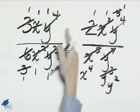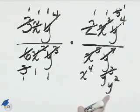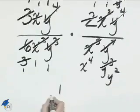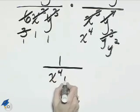All we have across the numerator is the number 1. In our denominator, we'll have x to the 4th and y squared. And so this should simplify to 1 over x to the 4th y squared.